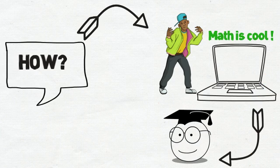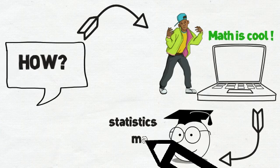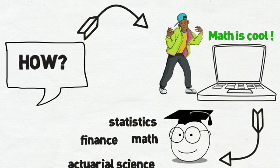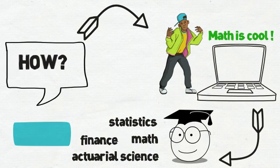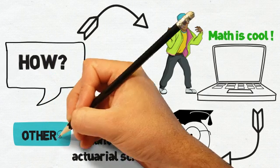you could earn an undergraduate degree in statistics, mathematics, finance or actuarial science. Please note that you could pursue other relevant undergraduate courses. The key,